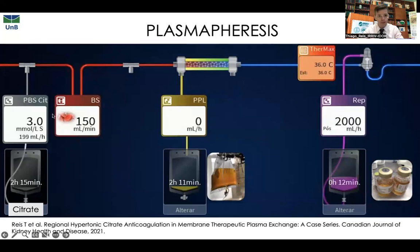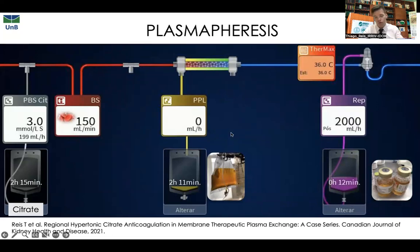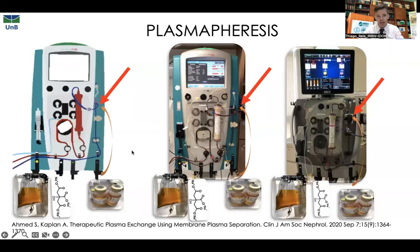This is the extracorporeal circuit. Imagine blood coming from left to right. Blood goes into the circuit, receives citrate, passes through the blood pump, goes into the plasma filter, then a warmer and bubble trap. The replacement solution — I represented albumin here, but you can also use fresh frozen plasma — is added at the bubble trap.